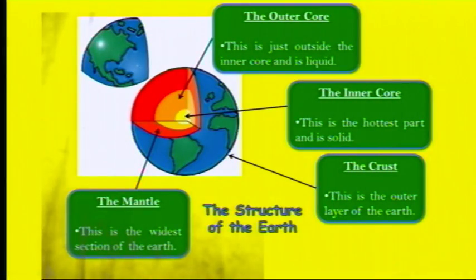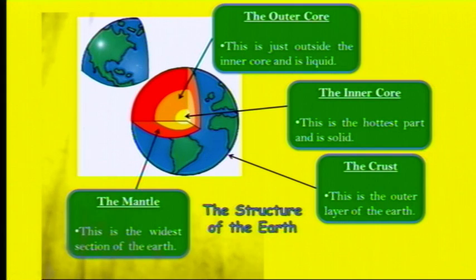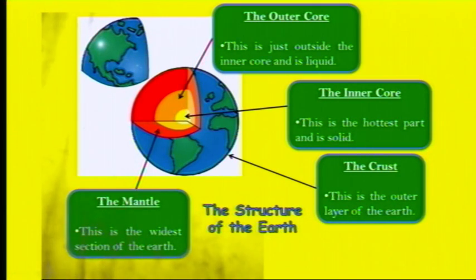The earth is made up of four main sections. We've got the inner core, which is the hottest part of the earth and it's a solid. The outer core just outside it is a liquid. After that we've got the mantle, which is the largest section of the earth and that's where we find convection currents, which are really important for the movement of the crust. And the final layer is the crust — the part that we live on.